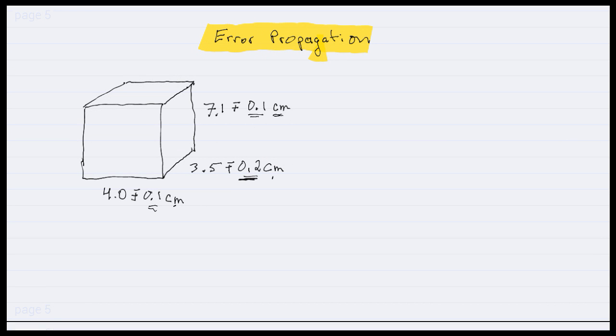Okay, let's now consider how errors propagate through our calculations. What I have here is a cube where I've measured the height, the depth, and the width. So the height is 7.1 with some error, which is 0.1 of a centimeter. The depth is 3.5 plus or minus 0.2 centimeters, and the width is 4.0 plus or minus 0.1 centimeters.